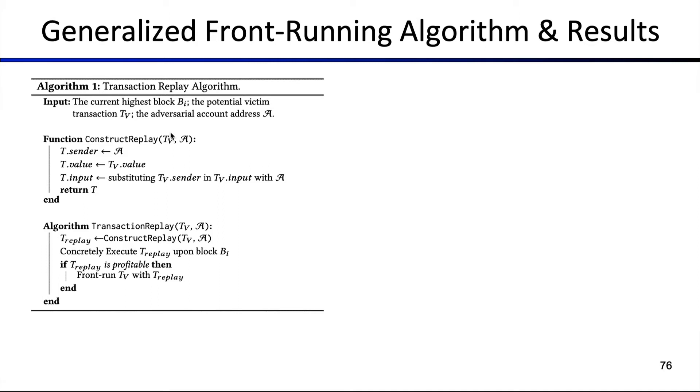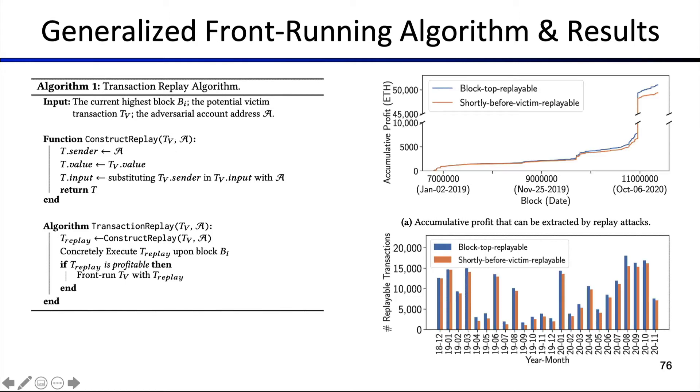What we have here is a potential victim transaction. This is being injected into this algorithm and we have here an adversarial address. So a victim transaction, adversarial address, and the adversarial address is replacing the sender address. At the same time, in the transaction input, we are searching whether the victim sender address is present anywhere in the input, and if it is, then we replace the input with the adversarial transaction. And that's really it.